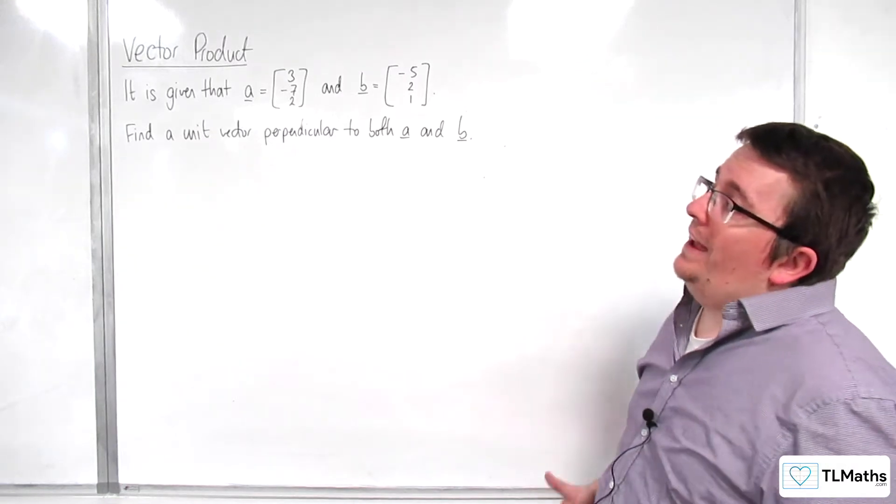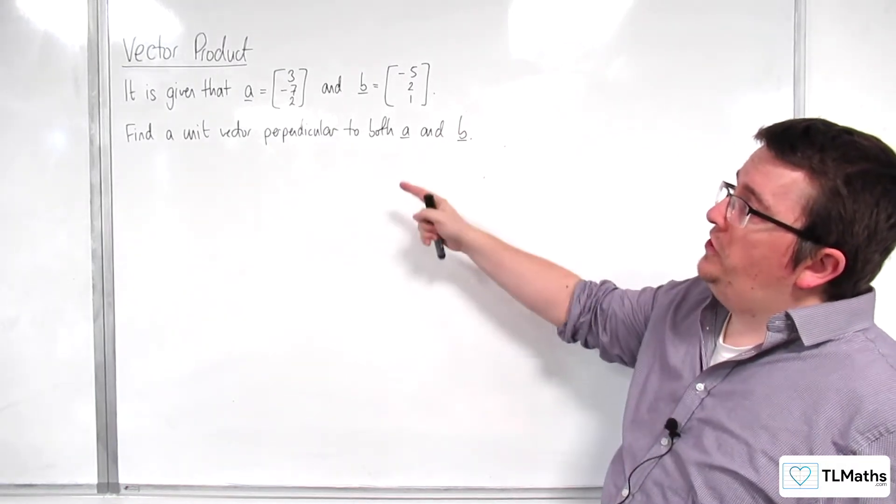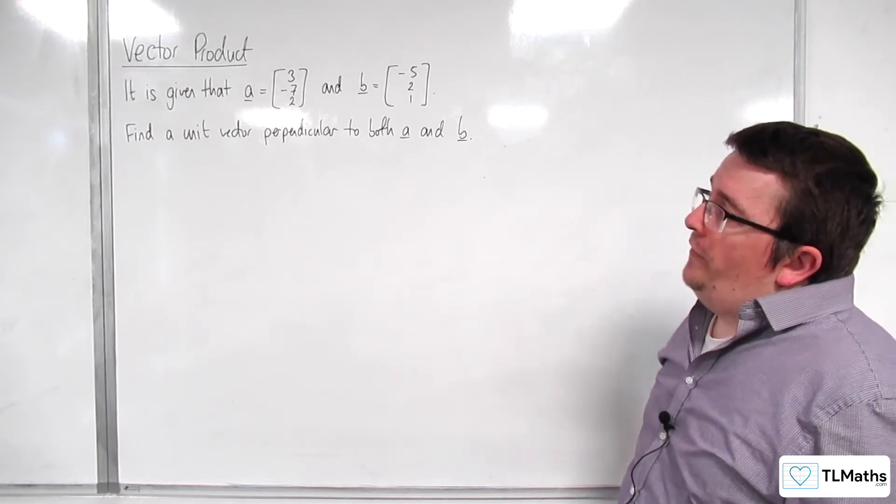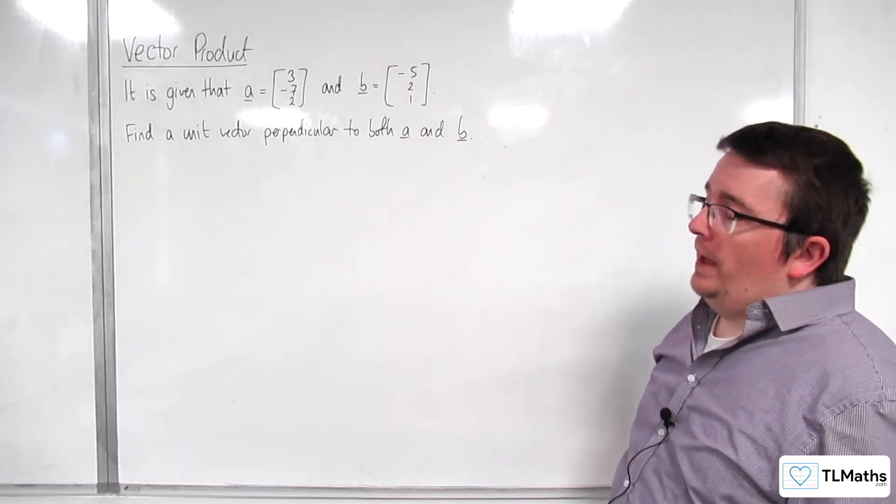In this video, it is given that a is 3, -7, 2, and b is -5, 2, 1. We need to find a unit vector perpendicular to both a and b.